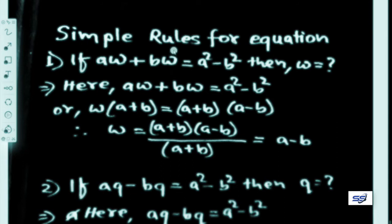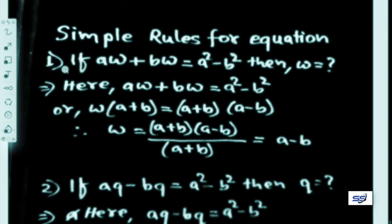Here are some simple rules for equation solving. An equation may be verbal or simple, but to solve it we should follow certain rules. Some equations can be solved by applying certain rules. Rule number one: if a·w plus b·w equals a squared minus b squared, then what is w?